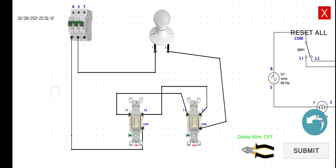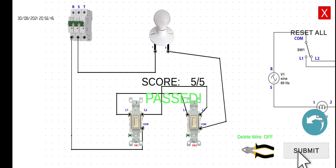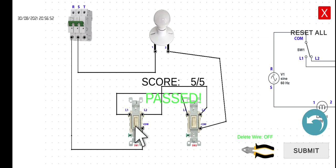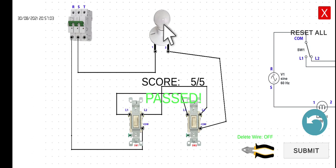It seems that our wiring is correct. Let's click the submit button. So as of this moment, the lamp is turned off. However, if we click this first switch, it will turn on. Click again — off. Click again — on. Off. Also at the same time, we can control the on and off of this particular lamp using switch two.